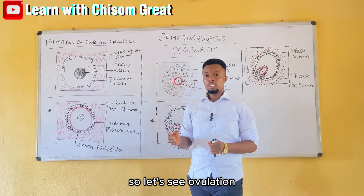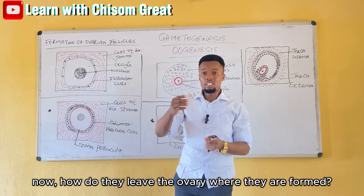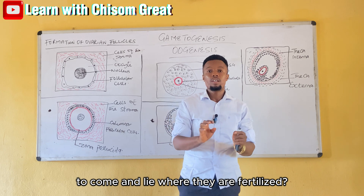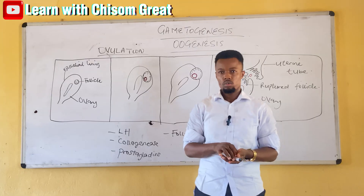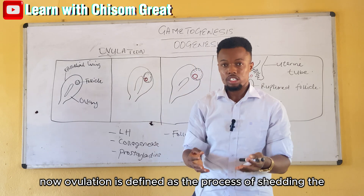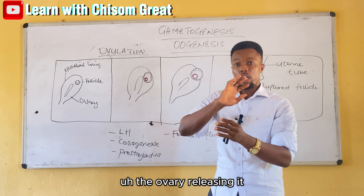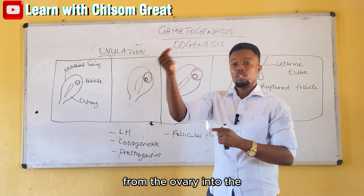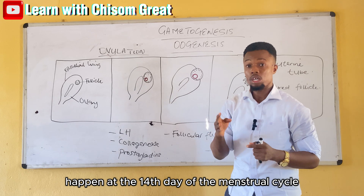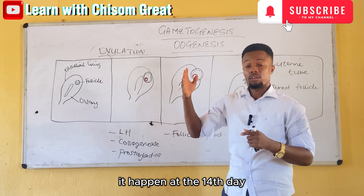Now let's look at ovulation. Ovulation is defined as the process of shedding the already matured ovum from the ovary — releasing it into the uterine tube where it awaits fertilization. Ovulation happens at the 14th day of the menstrual cycle, assuming we are using a 28-day cycle.